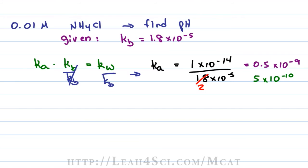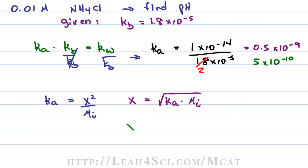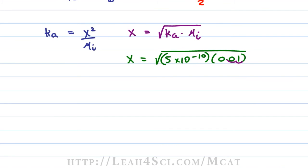Now we're skipping the ice chart and jumping straight to the expression of Ka equals x squared over molarity initial just like we did in the last video. Solve for x so that x equals the square root of Ka times molarity initial and then we plug it in. x equals 5 times 10 to the minus 10 times the initial molarity of 0.01. 0.01 move the decimal twice to the right, that's multiplying by 100. 10 to the minus 10 has to be divided by 100 so we drop the exponent by 2 and that means x equals the square root of 5 times 10 to the minus 12.